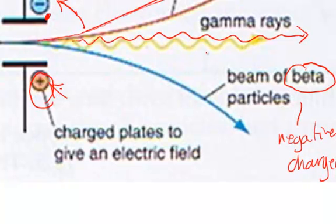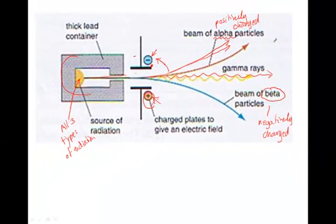The gamma rays are not affected by the electric field at all — they go straight through undeflected. This is because gamma rays are not particles and have no charge, so they are not affected by the electric field. A similar thing happens if you place the poles of a magnet in front of the beam — the alpha and beta are deflected in different ways, while gamma rays are not deflected by a magnetic field either.